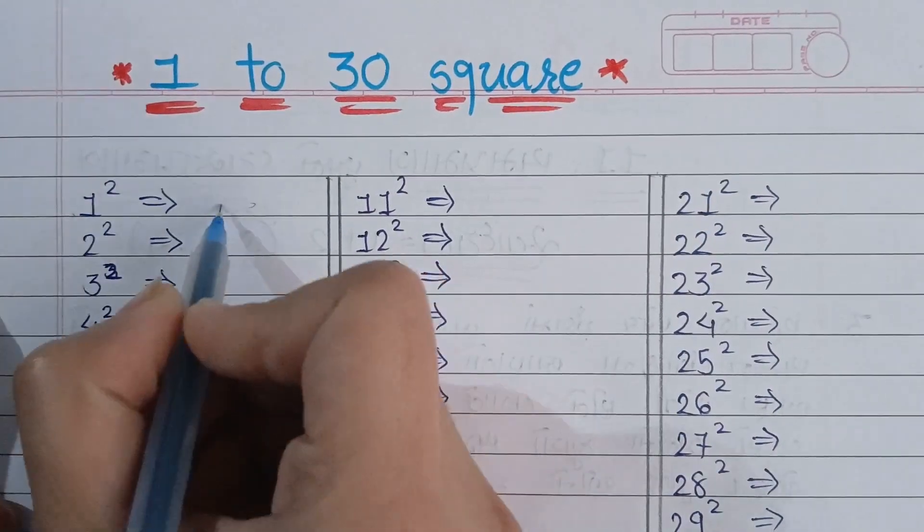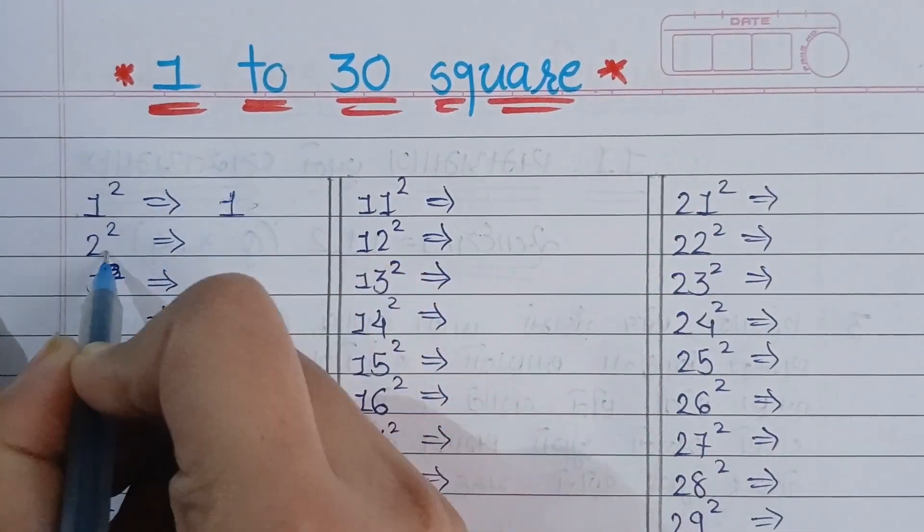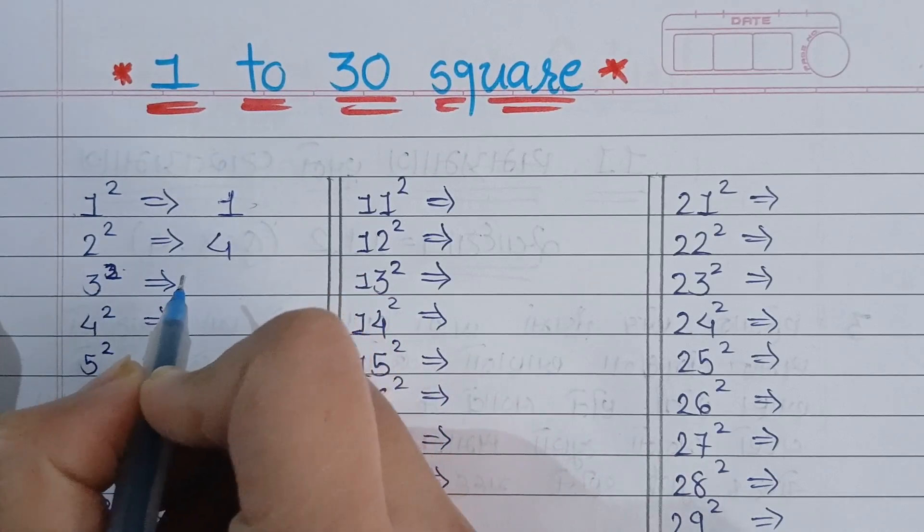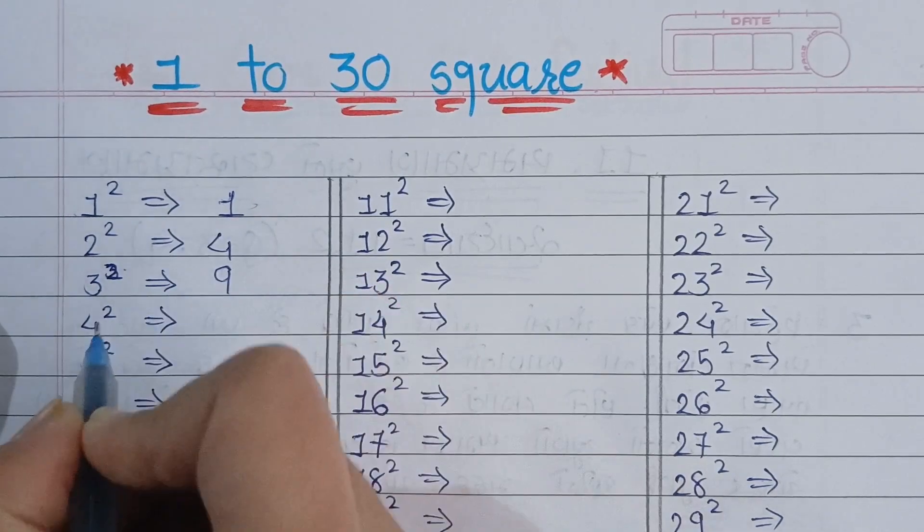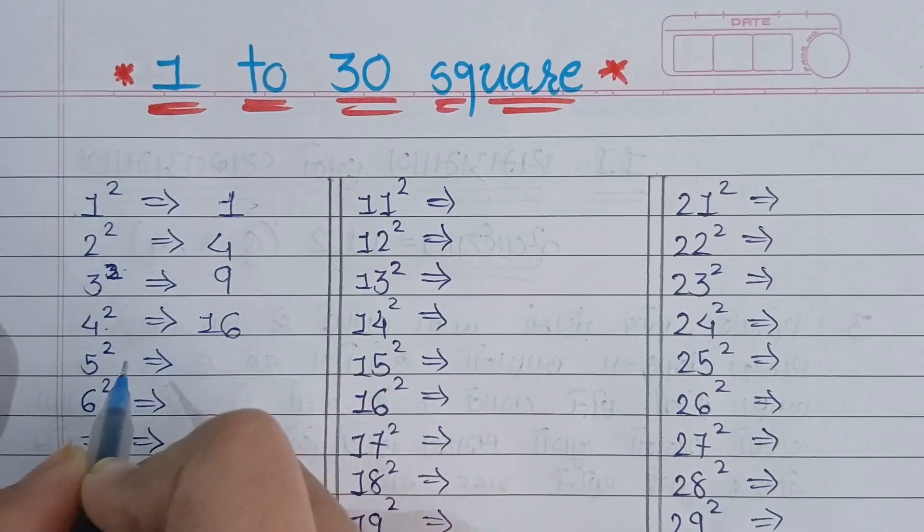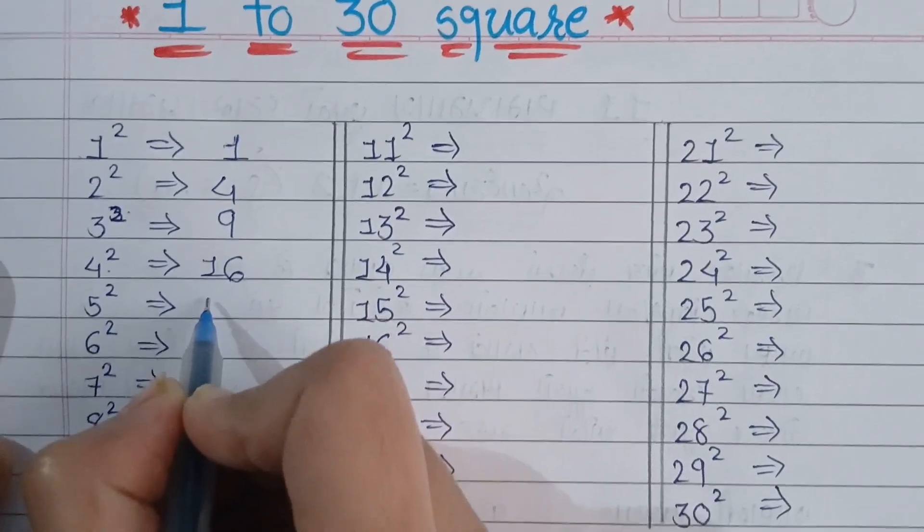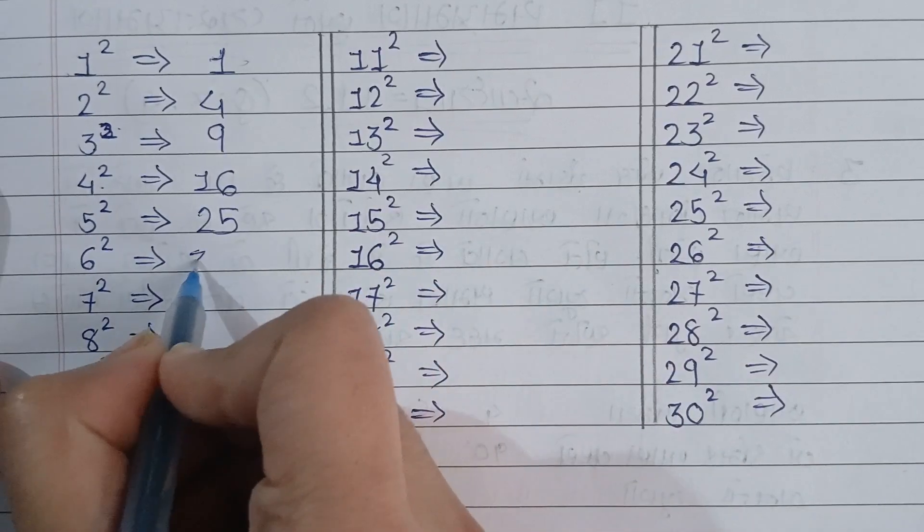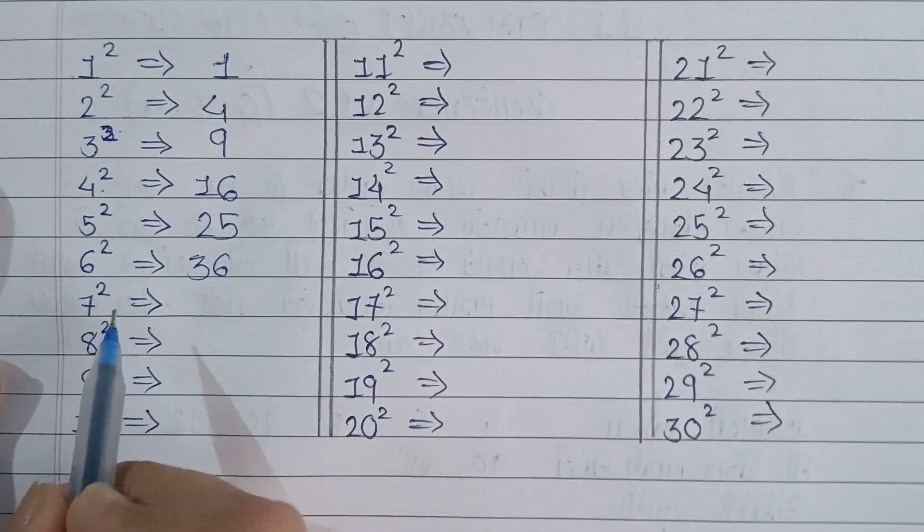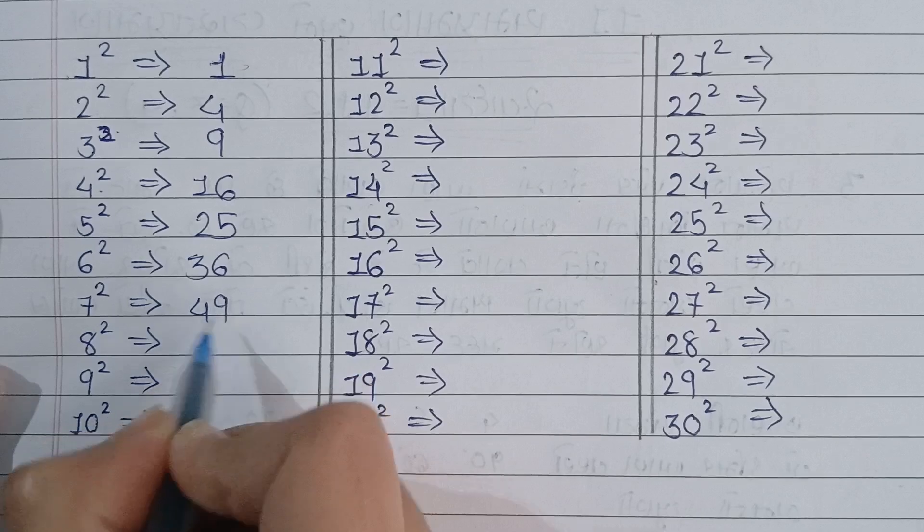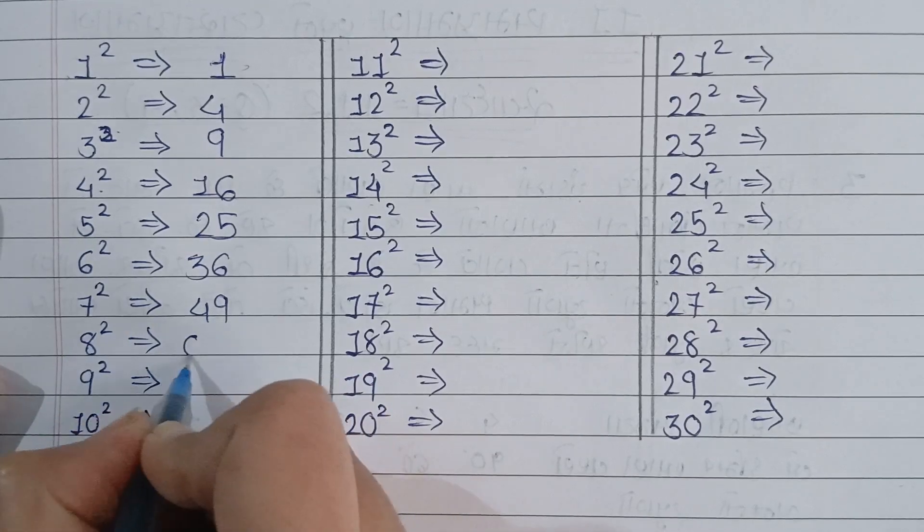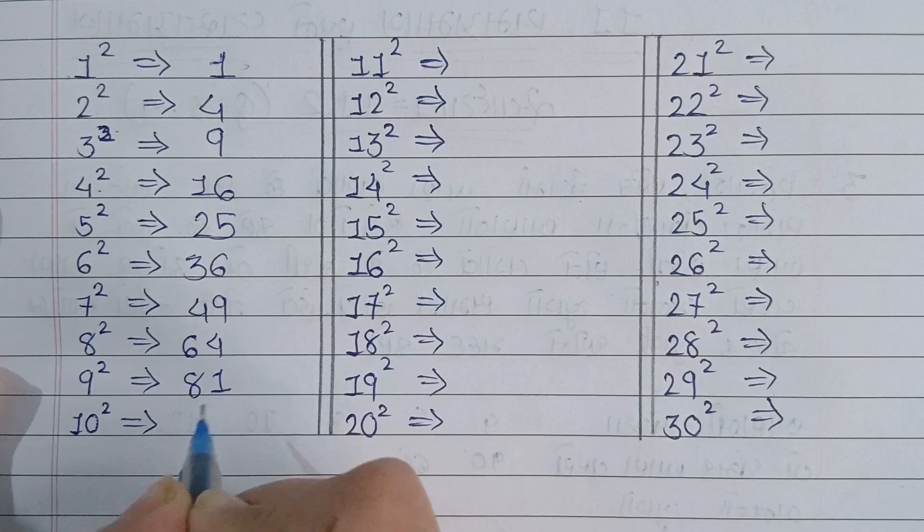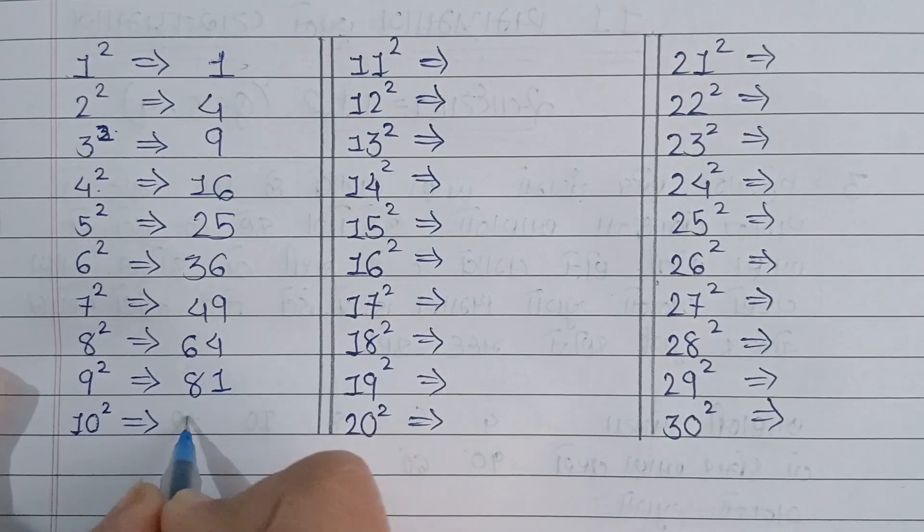So 1 square is 1, 2 square is equal to 4, 3 square is equal to 9, 4 square is equal to 16, 5 square is equal to 25, 6 square is equal to 36, 7 square is equal to 49, 8 square is equal to 64, 9 square is equal to 81, and 10 square is equal to 100.